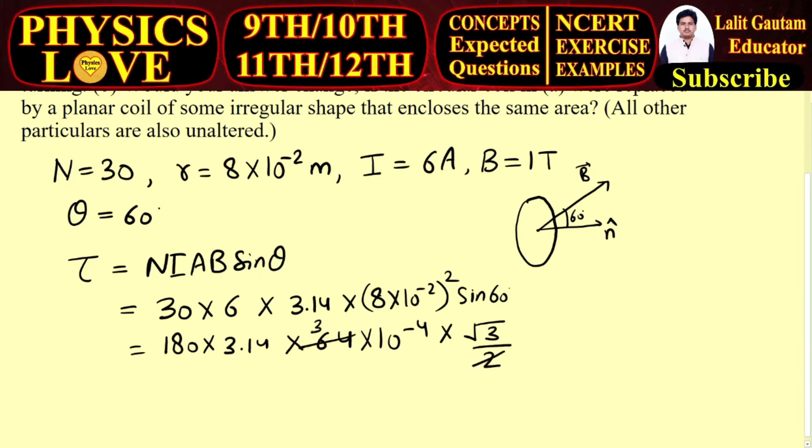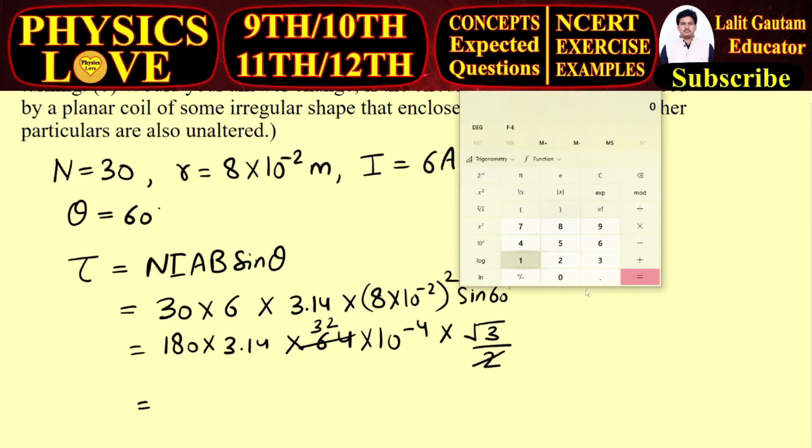So I can cancel it out to 32. Now 180 multiplied by 3.14 multiplied by 32 and multiplied by 1.732, so it will be 31,325.